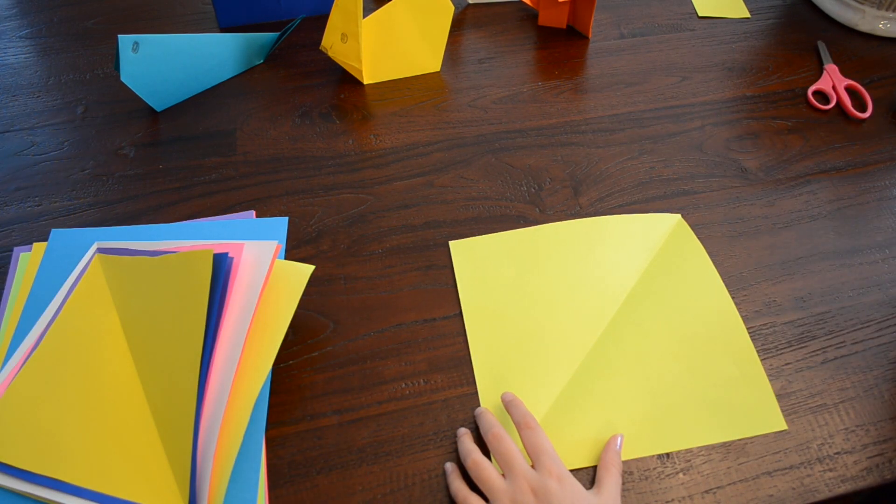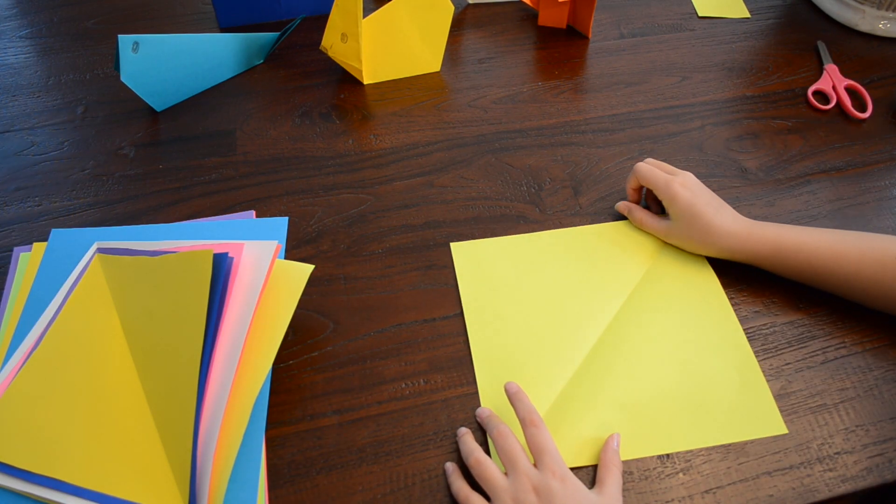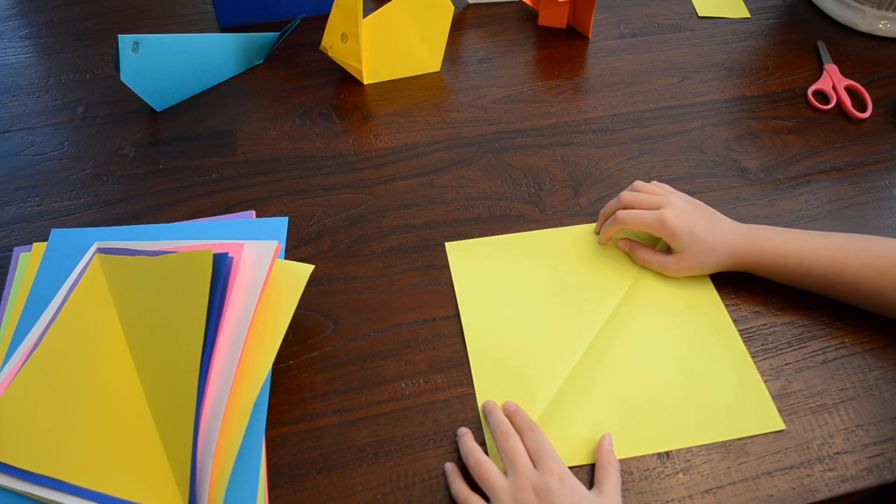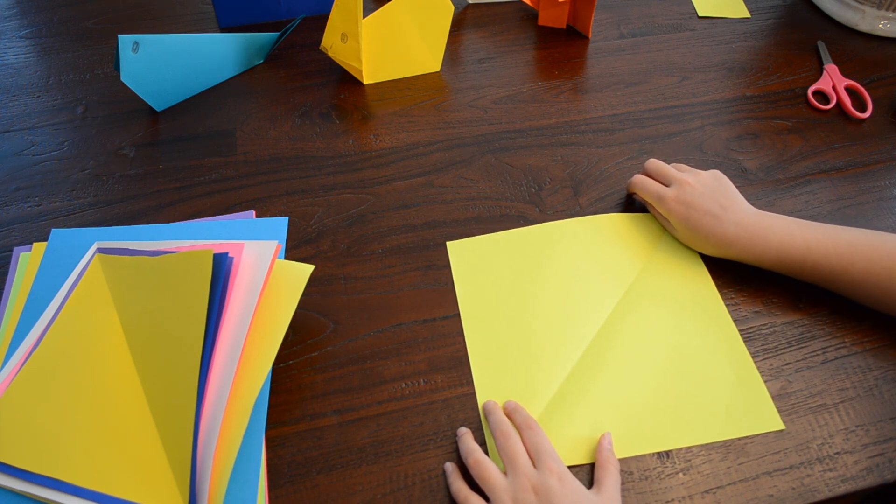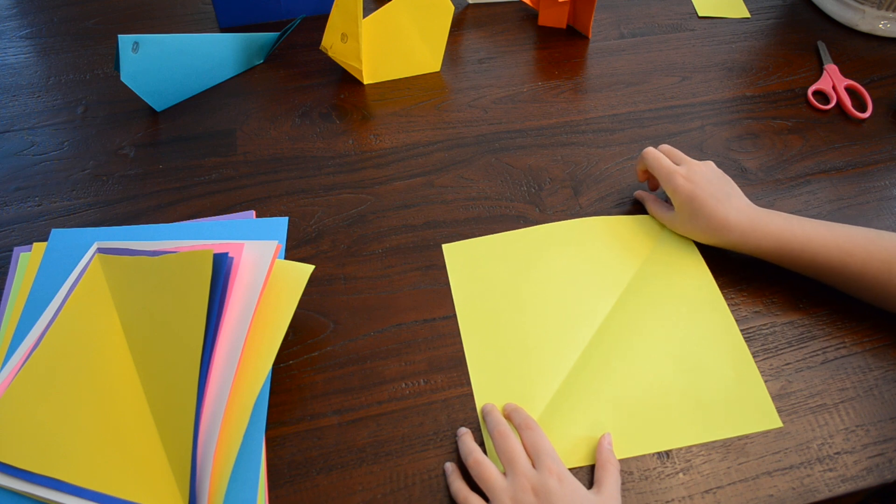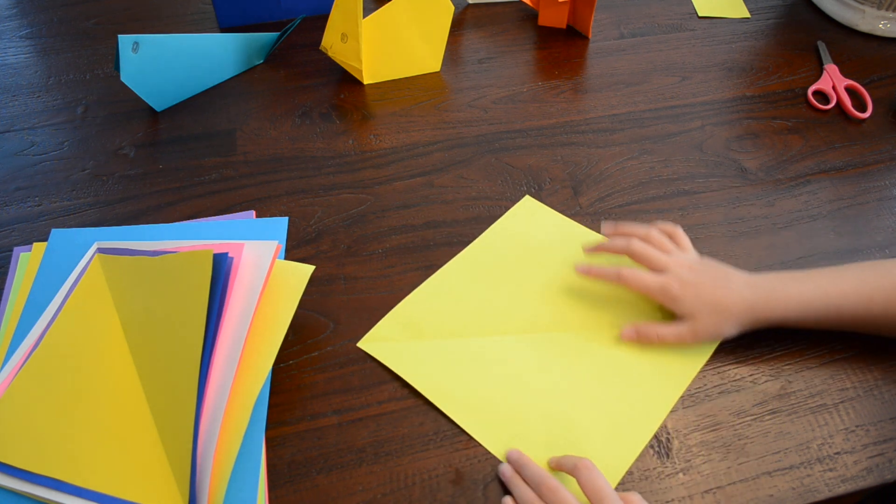You want to have a lot of space for this part, because you're actually going to start folding. So, if you need to, you can go ahead and pause it. First, you have to turn the square so it looks like a diamond shape.